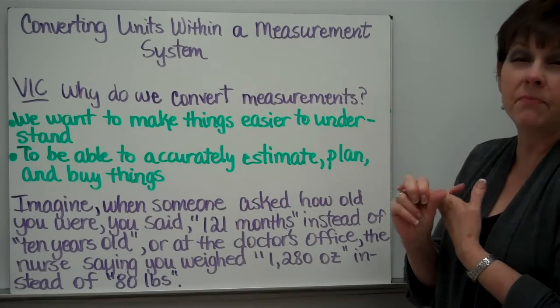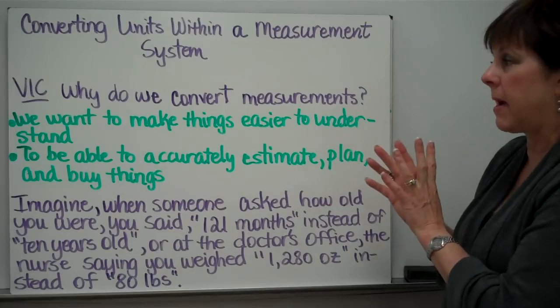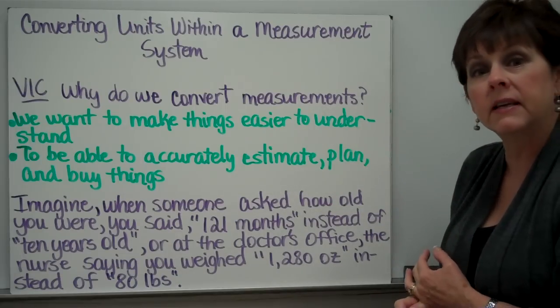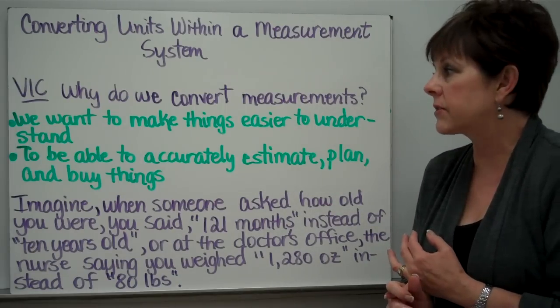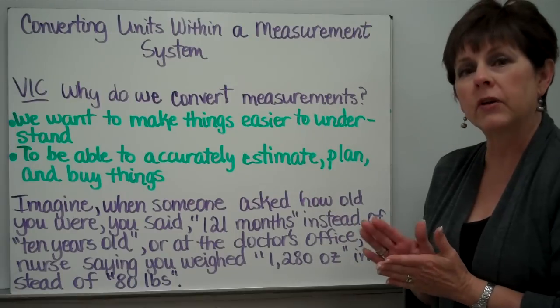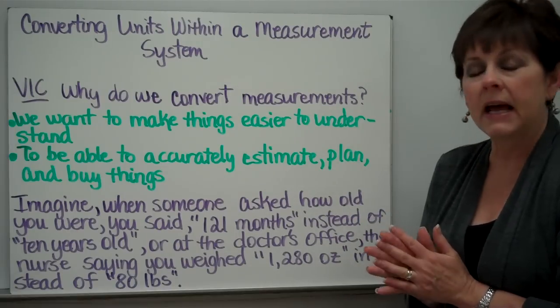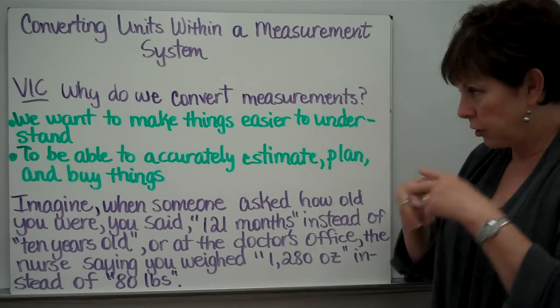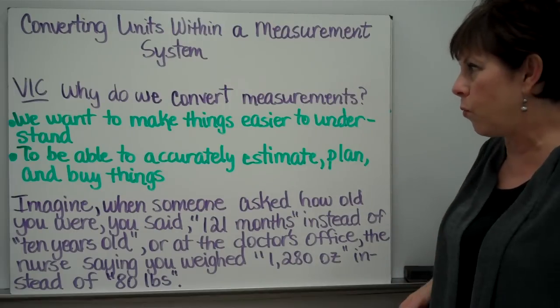Two very big things. There's others, but the two main things are we want to make things easier to understand, and we also want to be able to accurately estimate, plan, and buy things. And you might be thinking, okay, what do you mean?